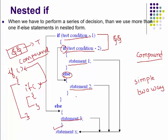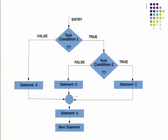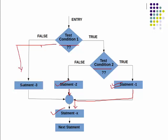Let us understand nested if through a flowchart. If test condition 1 is true, then test condition 2 is evaluated. If condition 2 is also true, statement 1 is executed. If condition 2 is false, statement 2 is executed. In every case, after any statement executes, control goes to statement X at the end. If test condition 1 is false, statement 3 is executed.